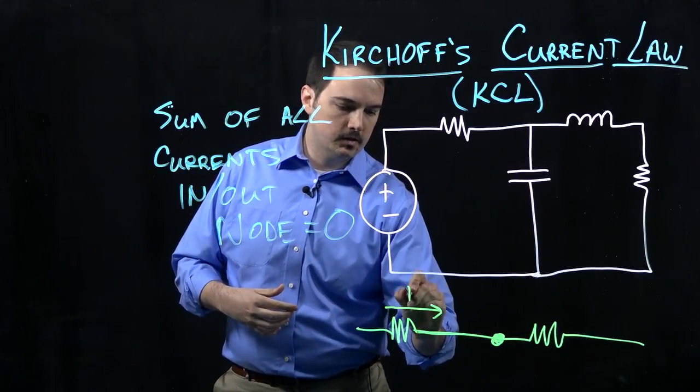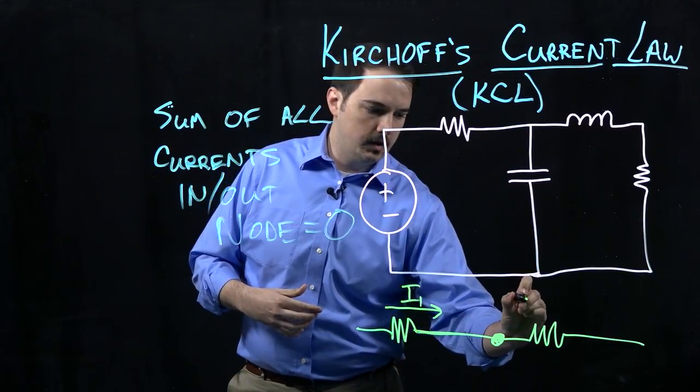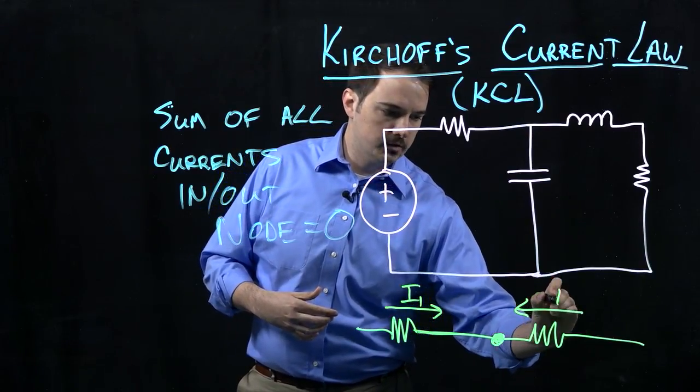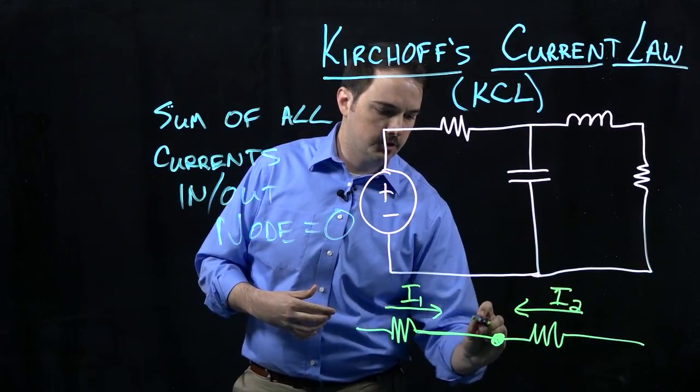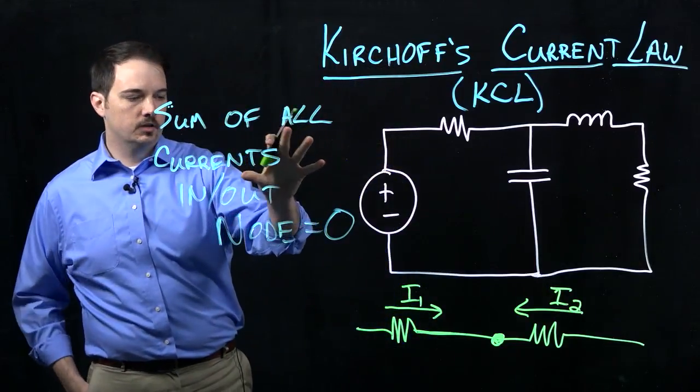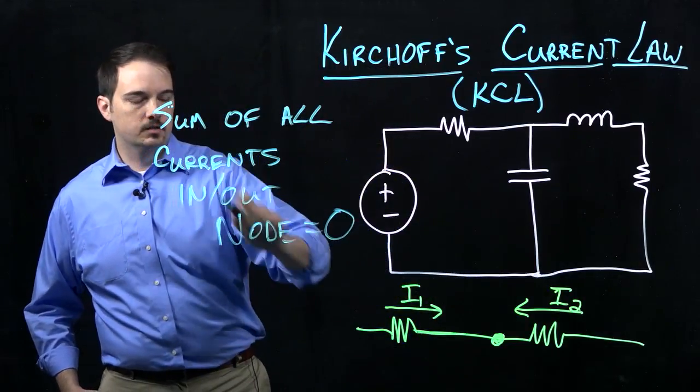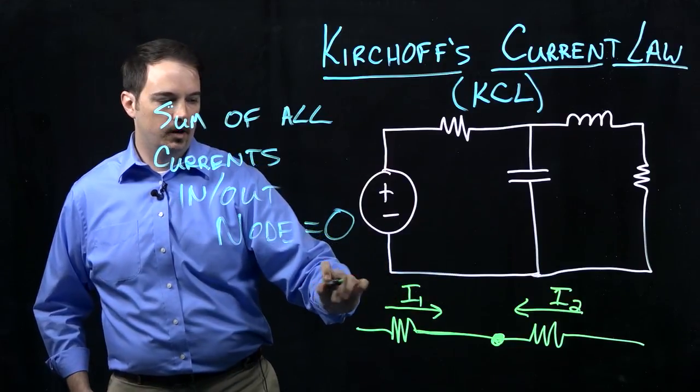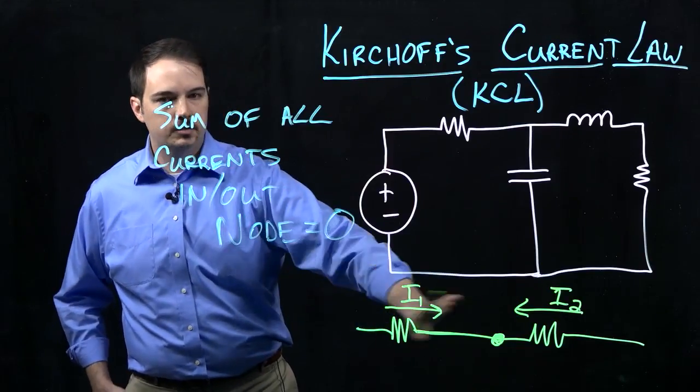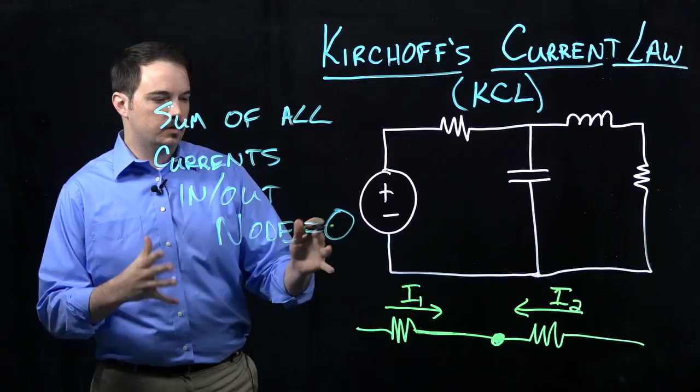But if we go ahead and define a current, let's say I1 here, and then let's say I2 is pointing the opposite direction. Well, what Kirchhoff's current law tells us is that these two currents have to be equal because the sum of those two has to be zero. So that tells us just for this series configuration, they have to be equal.